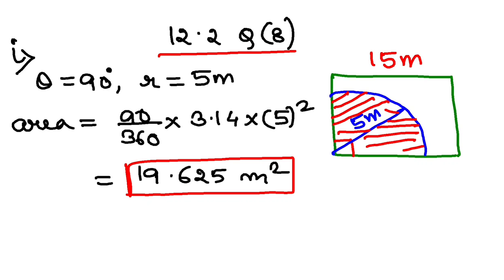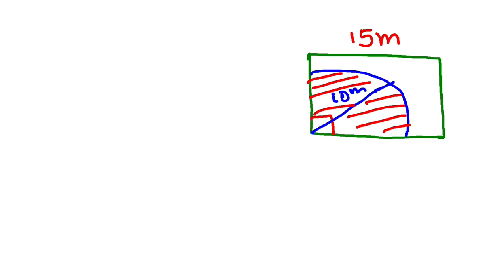Now let's solve part 2. In the second part of the question, instead of 5 meters, the length of the rope is now 10 meters. My theta is again the same, 90 degrees, but this time the radius or length of the rope is 10 meters.